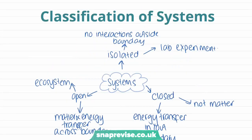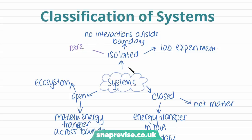Next, we're going to look at the classification of systems, because not all systems have the same characteristics and they can act differently. We tend to have three different types of systems. The first type is an isolated system, which is a system that has no interactions outside its boundaries. These types of systems are very rare and don't occur in nature — they mostly occur when experiments are taking place in a laboratory.